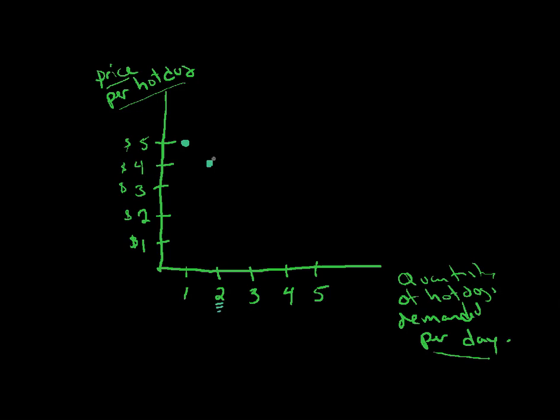Second hot dog, or two hot dogs. If you want me to buy two hot dogs, the price better be $4. Of course, if you were good you could charge me $5 for the first hot dog and then $4 for the second. But if you didn't know that, you could just say the hot dogs are $4 and I'll buy two.